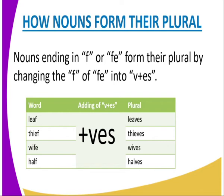Nouns ending in -F or -FE form their plural by changing the F or FE to V and adding -ES. For instance, the word 'leaf' — we change the F to V and add ES — giving us 'leaves'.